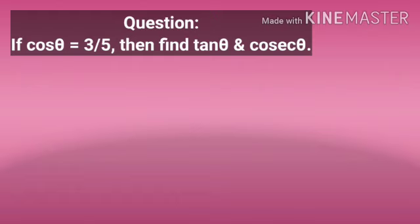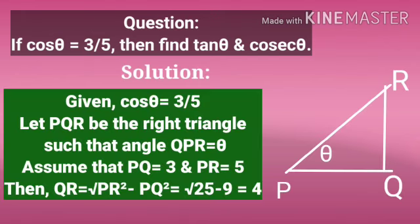Now let us have practice time. The question is: if cos theta equals three by five, then find the values of tan theta and cosec theta. Let PQR be the right triangle such that angle QPR equals theta. Let us assume PQ equals 3 units and PR equals 5 units. By using the Pythagorean formula, QR equals the square root of PR squared minus PQ squared, which finally gives QR equal to 4 units.